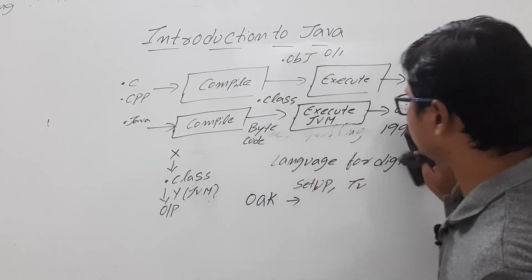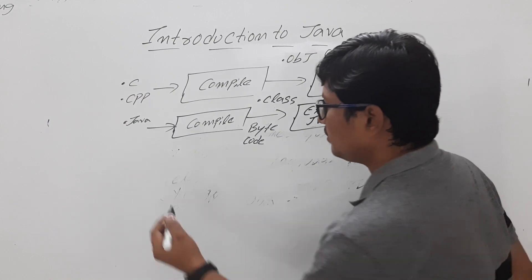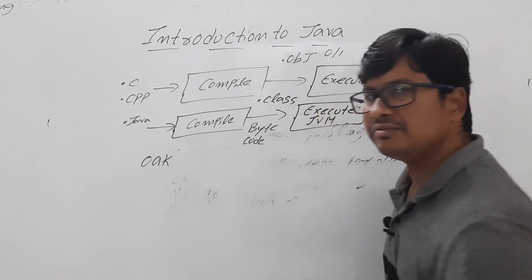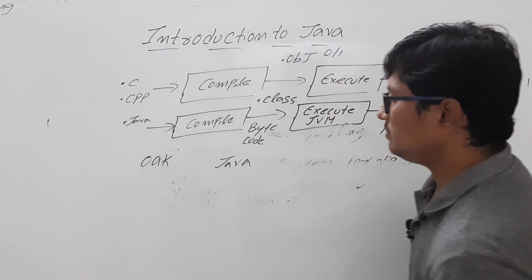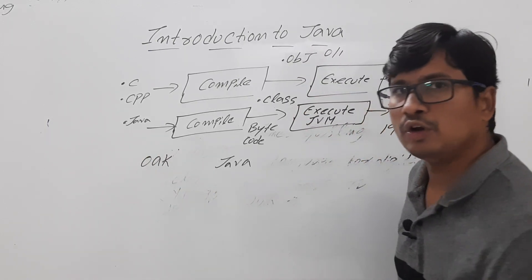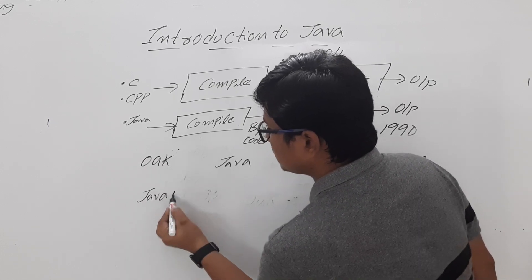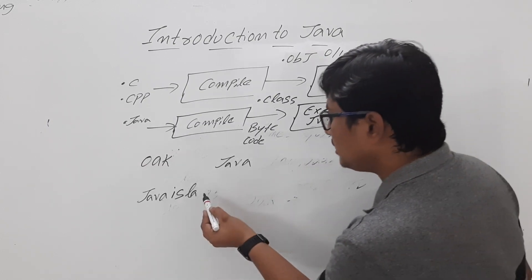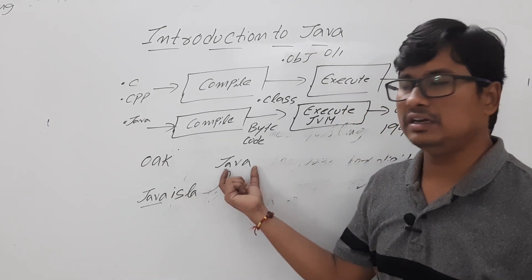Now let me explain why the language was renamed Java. Initially it was called Oak, but they decided to change the name and considered several options including 'Silk.' Finally, they chose 'Java' because James Gosling and his team consumed a lot of coffee while developing the language, and coffee beans are very famous in the Java island. That is why they kept the name Java.